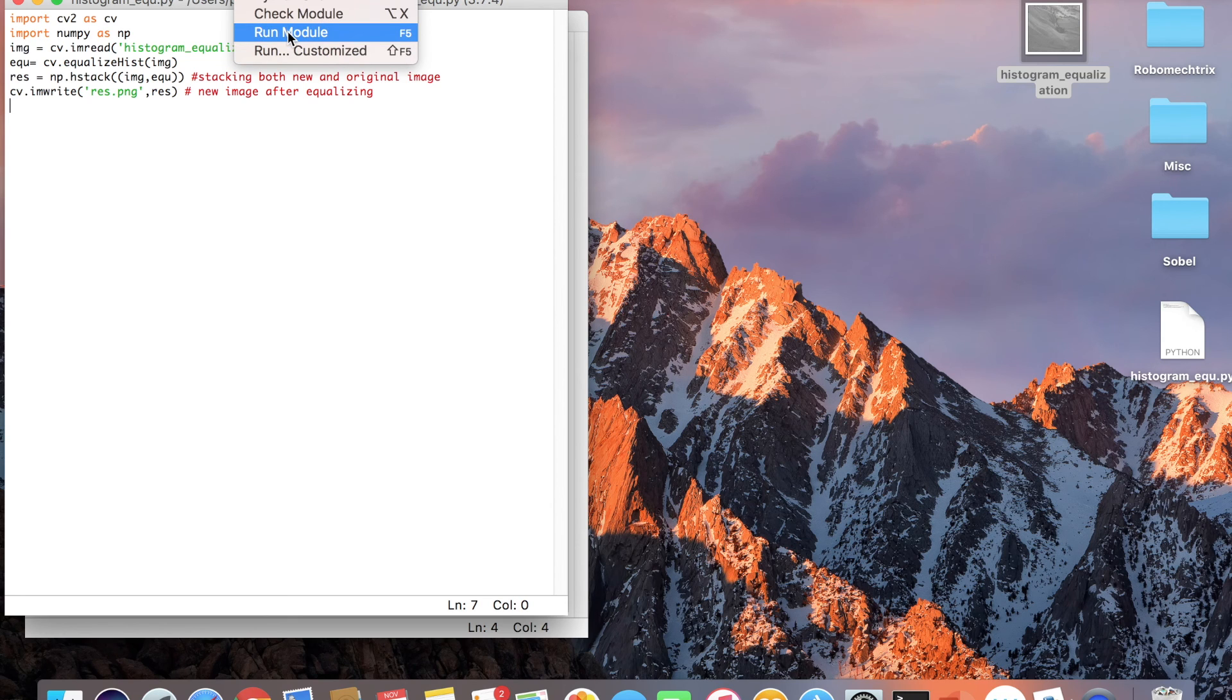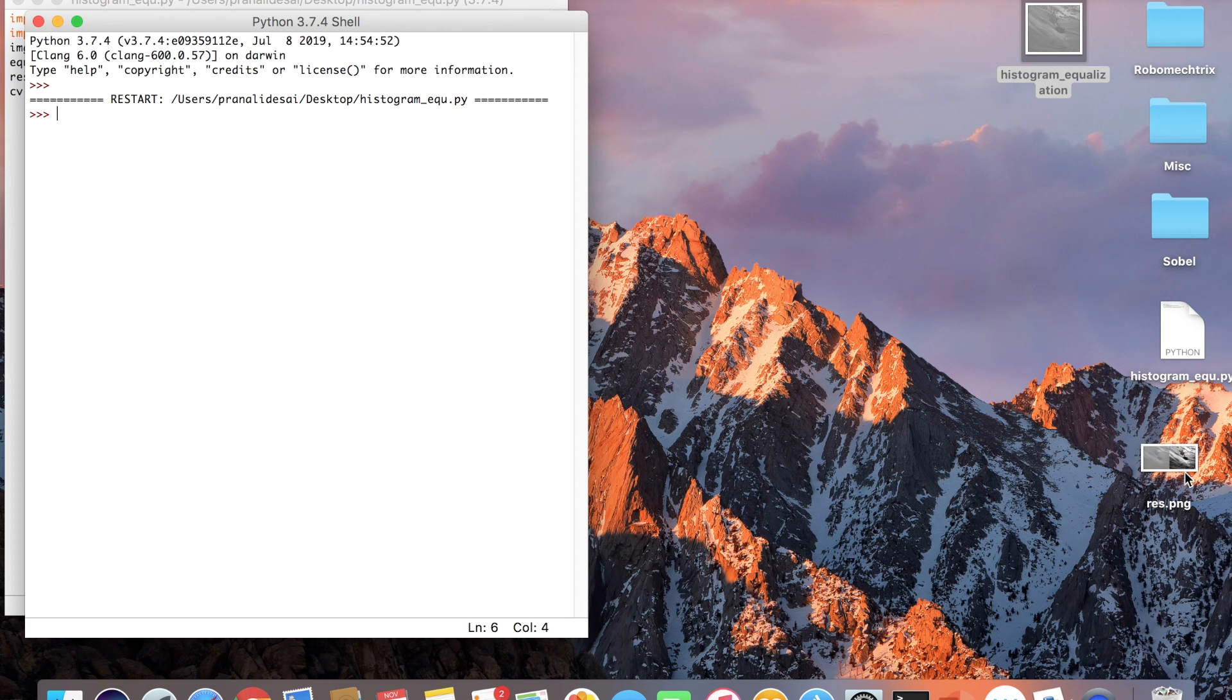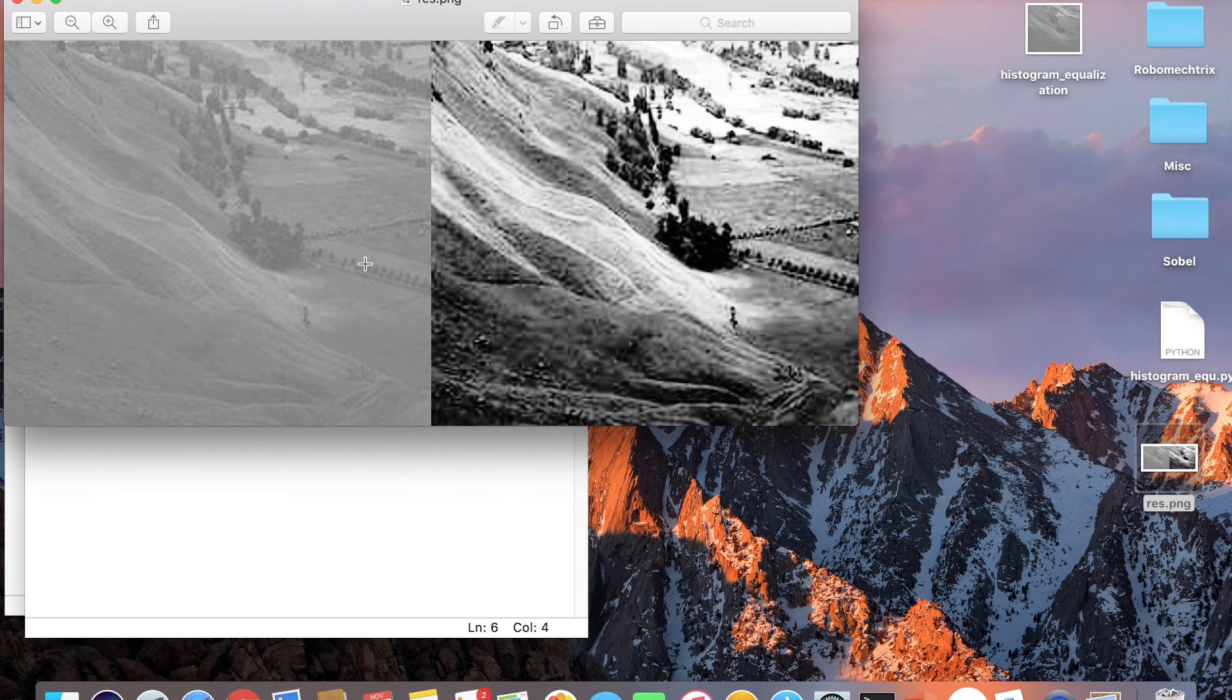So now I'm running it and we see that this image has been created over here. You see that the image was originally quite dark and now the overall grayish area has been spread across, and some parts are dark, some parts are light, and it's not just concentrated.